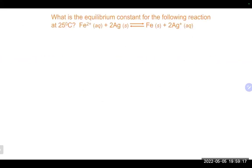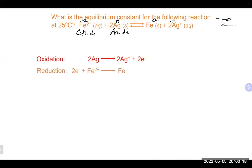Let's try another one: what is the equilibrium constant for the following reaction, and which would be our anode and cathode? The anode would be the silver. Looking at the equation, silver starts at zero and ends at plus one - going through oxidation - so it is our anode. The iron goes from plus two to zero, being reduced, which makes it our cathode. Because we are given the overall reaction, we need to look at it carefully.